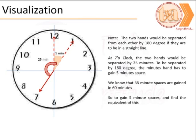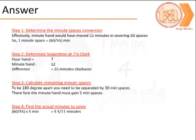The important thing is to understand the concept of minute spaces. The first step is to determine the conversion. When the minute hand covers 60 spaces, the hour hand moves 5 minutes. So the effective separation is 55 minutes, which is equivalent to 60 spaces of the minute hand. Therefore, one minute space equals 60/55 minutes.